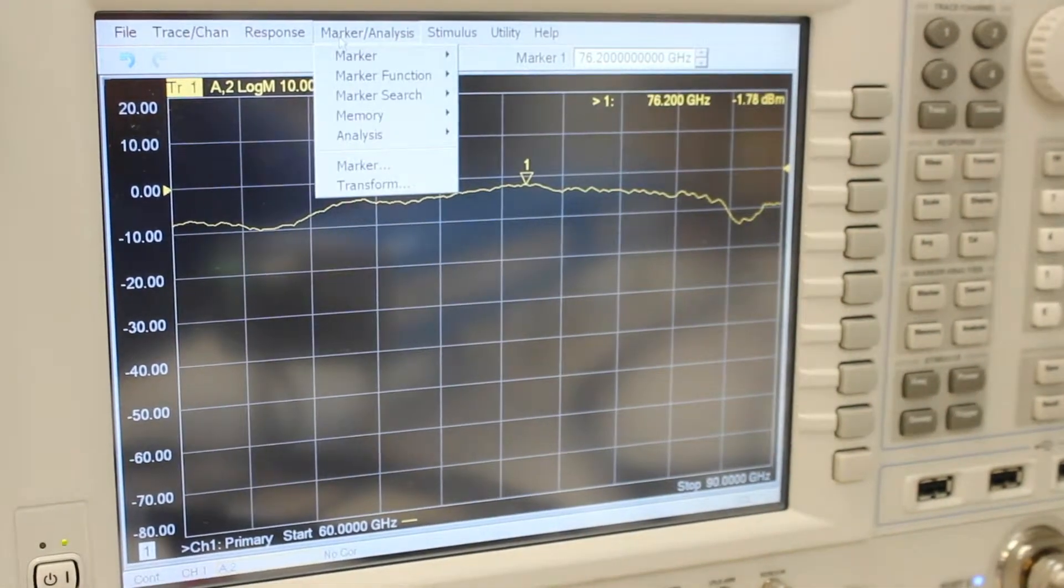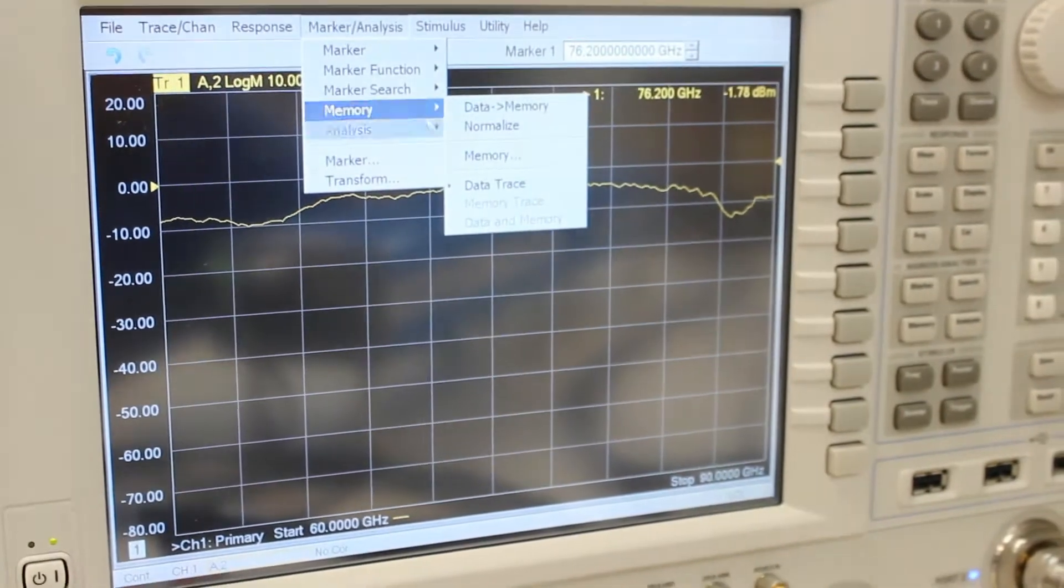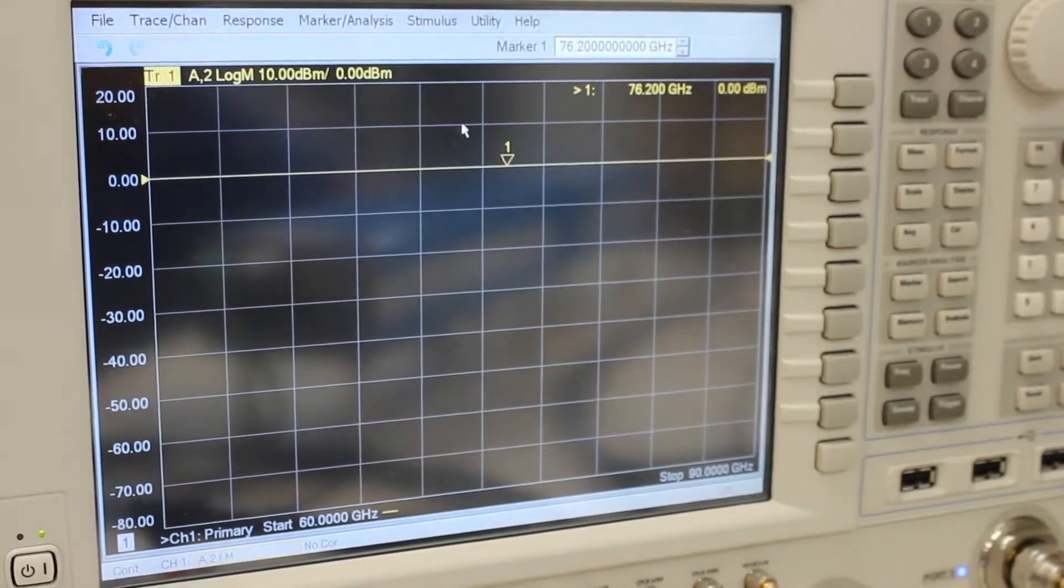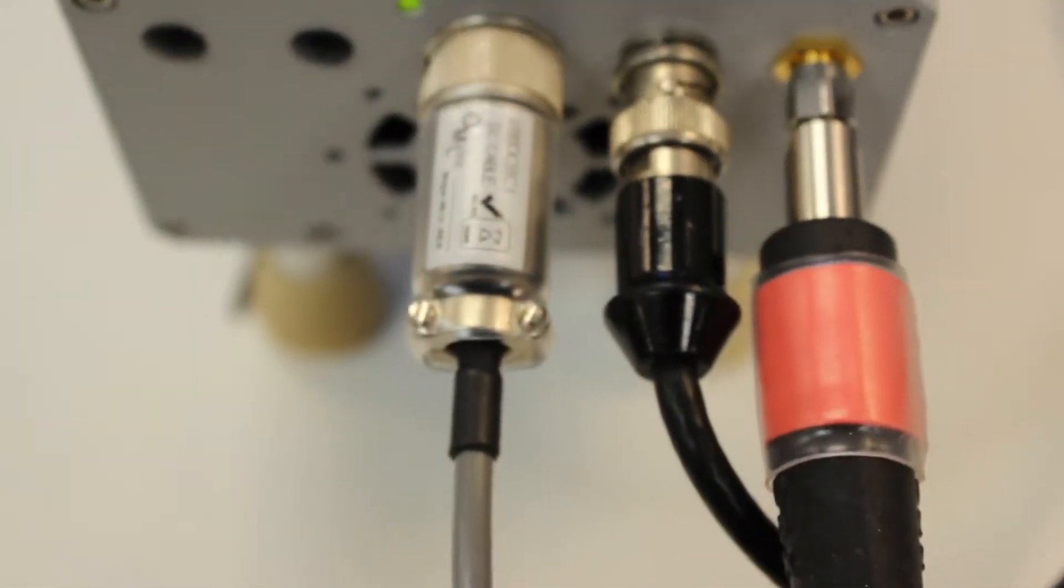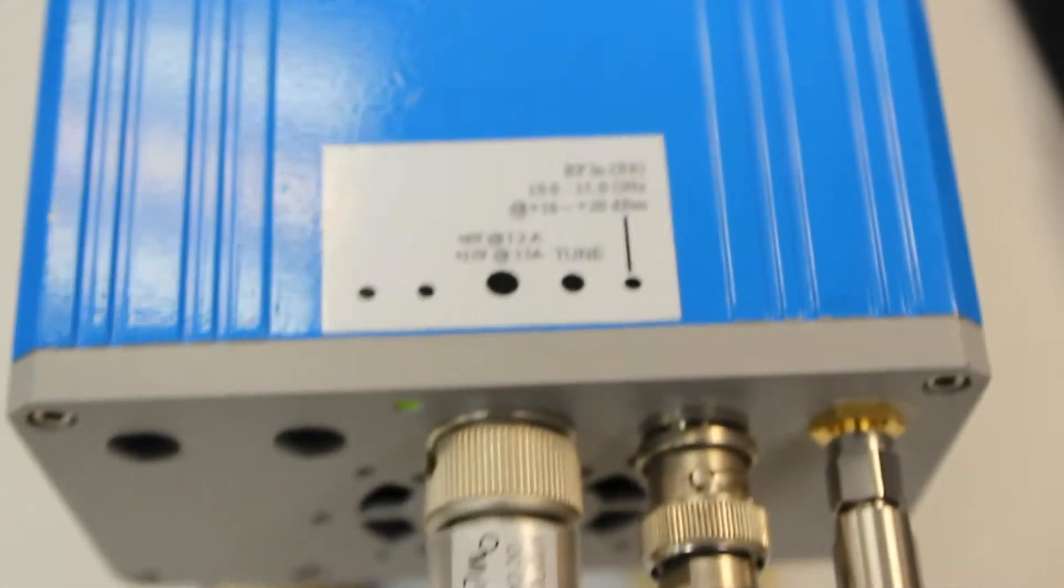Once these steps are completed, you will want to select Memory and then Normalize. This allows for a better view of the dynamic range response. The electronic source module has a V-tune connector, which is an addition from the basic source model.